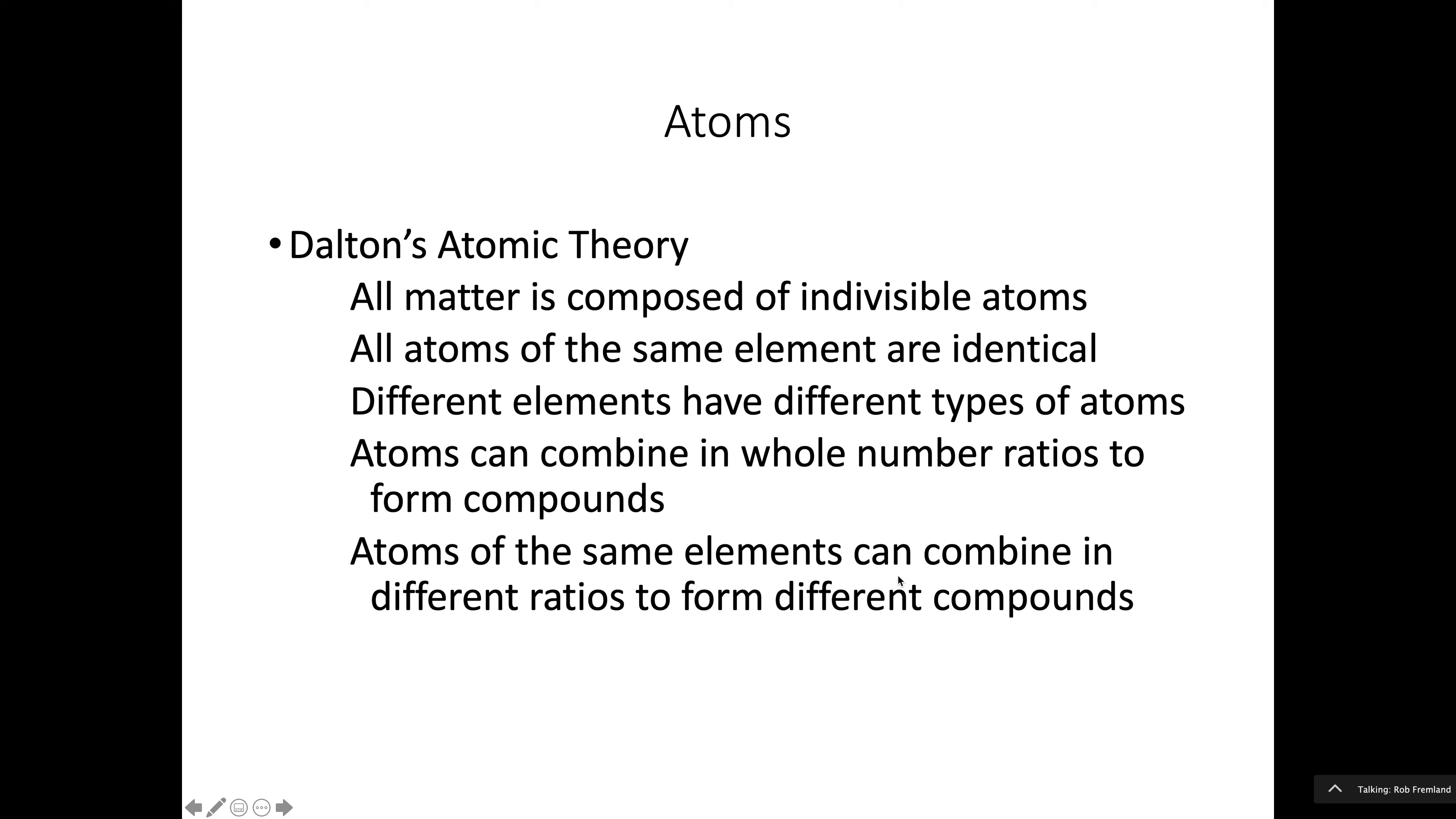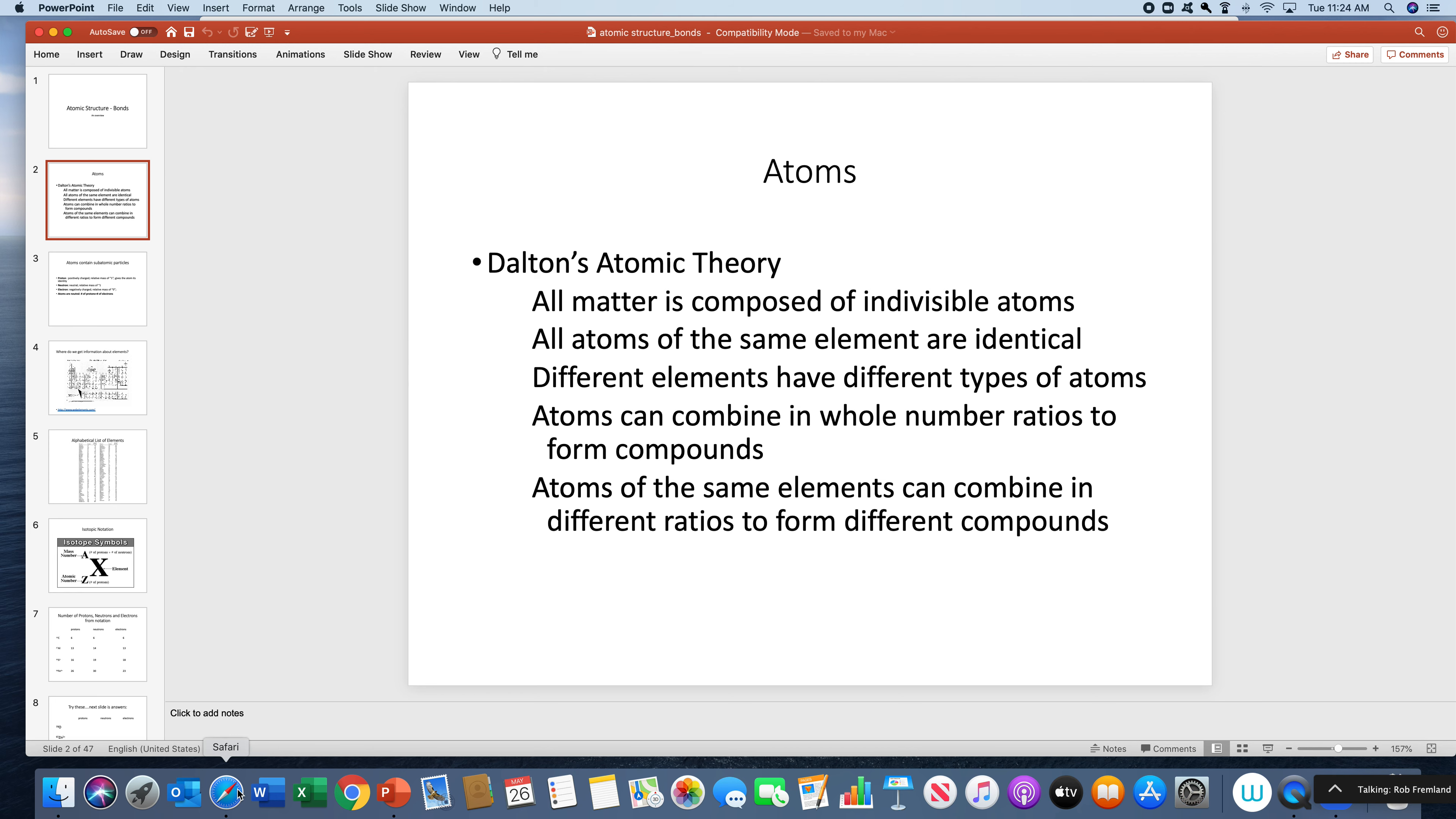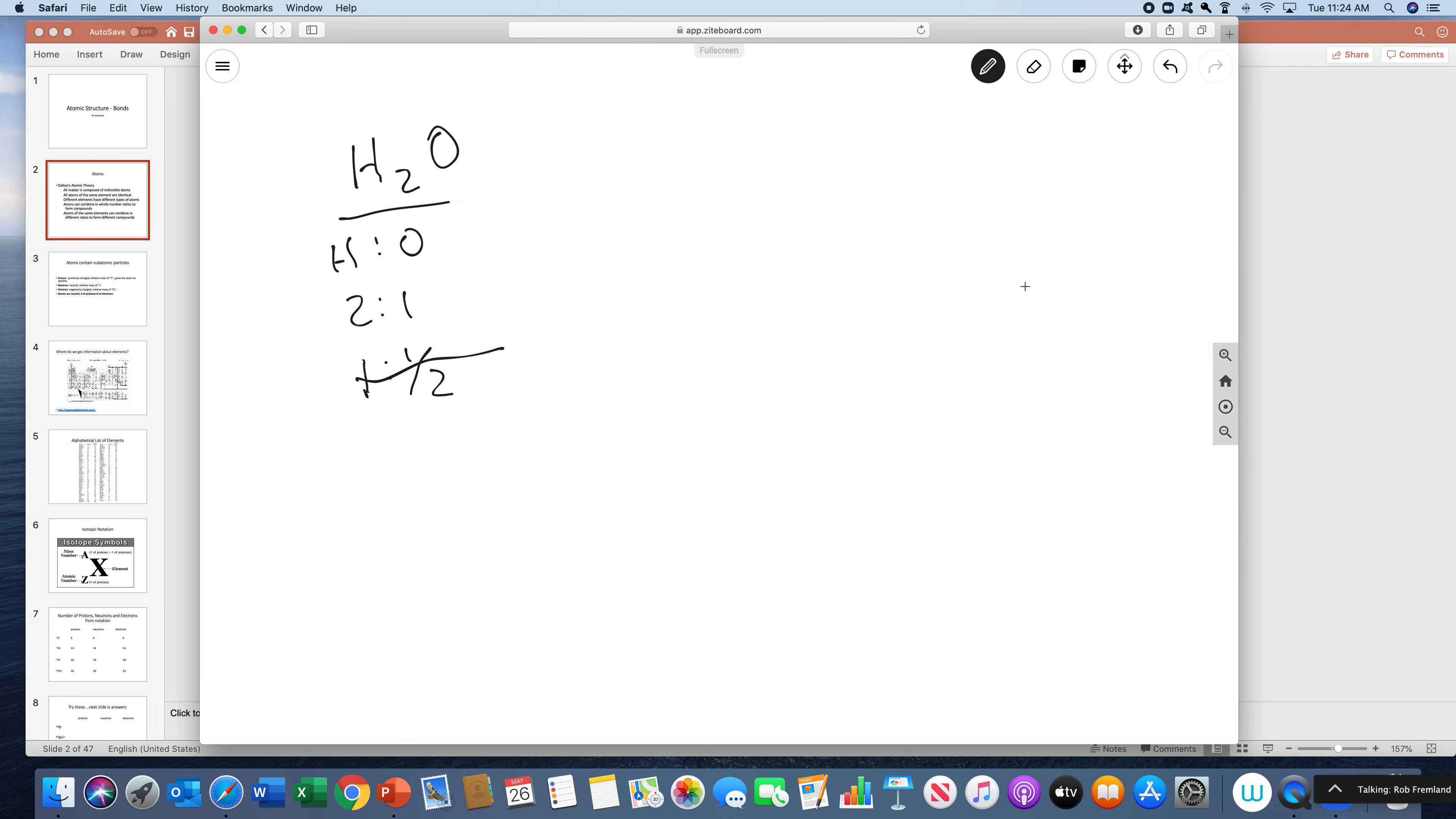And then this one says you can put the same stuff together differently and get different stuff. Atoms of the same elements combined in different ratios to form different compounds. So again, let's go to the whiteboard. What this means is let's say I have this compound H2O. And we know all sorts of interesting stuff about water. This is water. Water is a clear, colorless liquid at room temperature. Water is necessary for life as we know it.